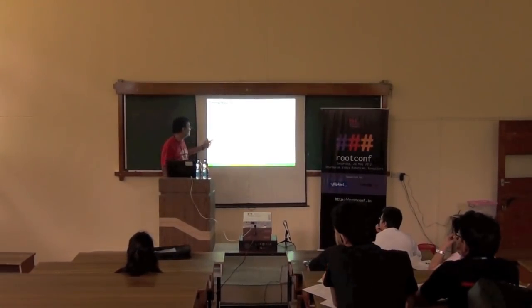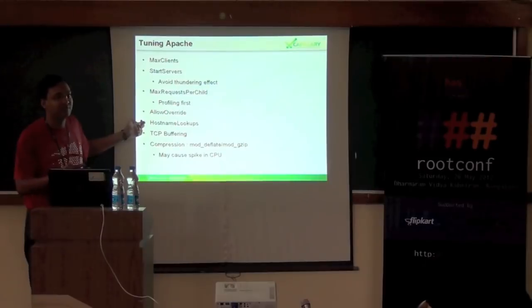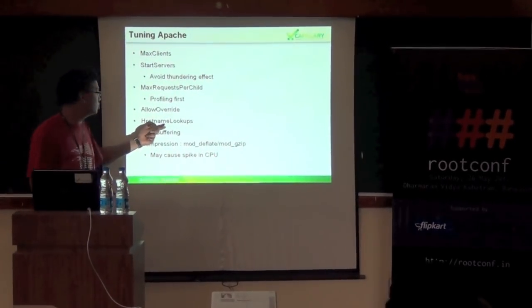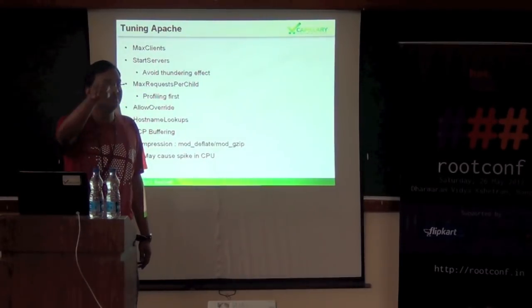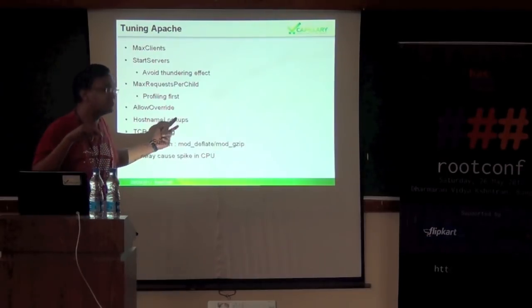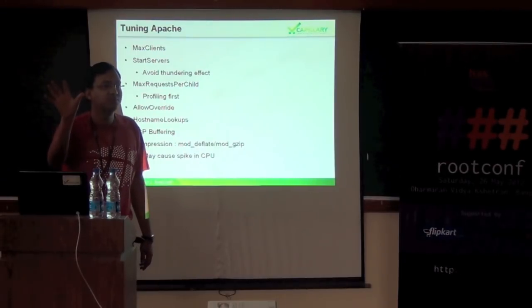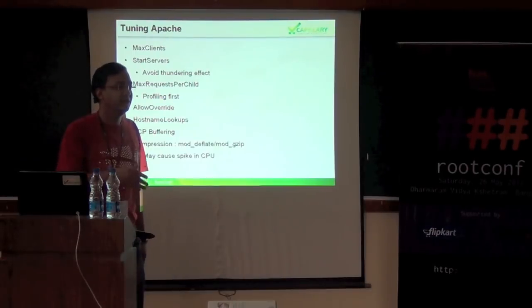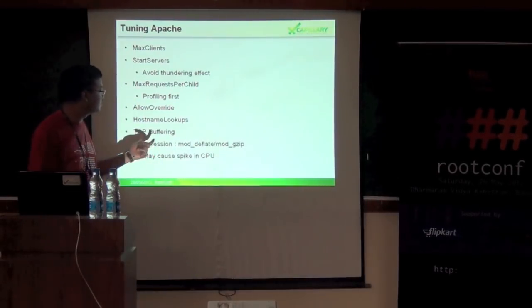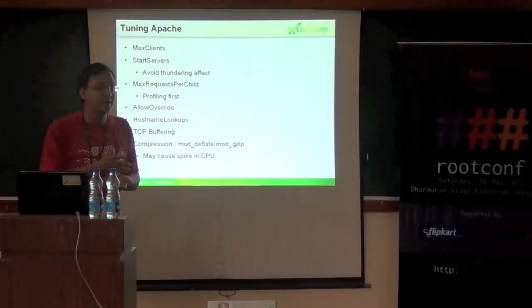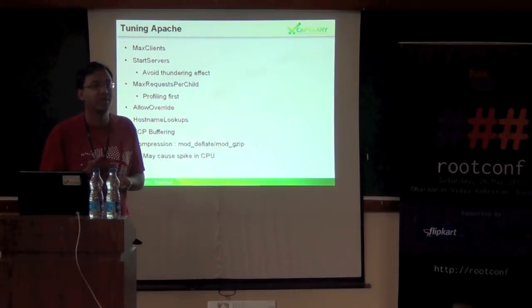HostnameLookup should remain disabled (which is the default) and should not be enabled. When a request reaches Apache it contains the IP address of the client. If you enable HostnameLookup, Apache will automatically try to translate that IP into a canonical URL by doing an external DNS lookup, and DNS lookups are not always fast. Even if you need to translate IP addresses to canonical URLs for logging, you can use log analyzers and other tools to do that after the fact.